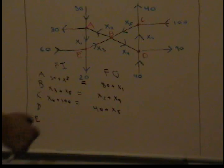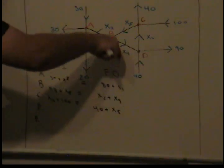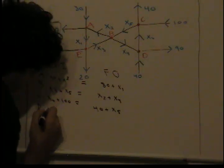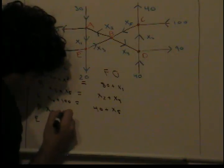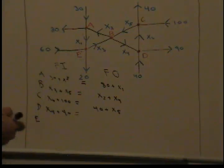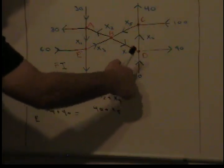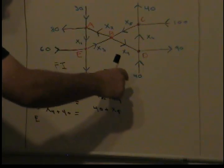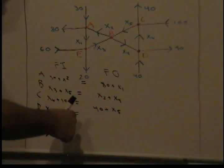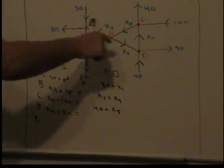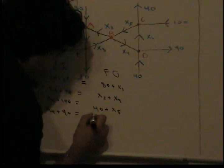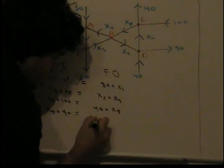Now node D. What flows into node D? x4 and 40 flow in, so we say x4 plus 40. What flows out of node D? 20 and x3 flow out, so we say x6 plus 90.